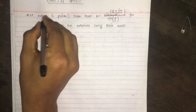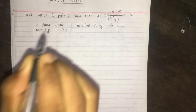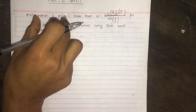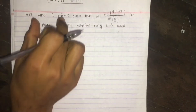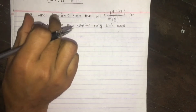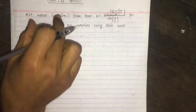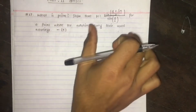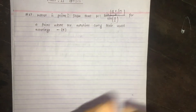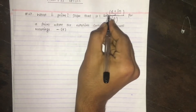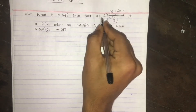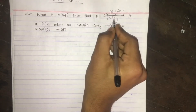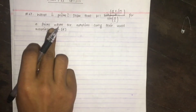What is a prism? What is the angle of prism? This question covers the condition of minimum deviation and its derivation, where mu is equal to sin((A + D_minimum)/2) divided by sin(A/2), for a prism where notation carries usual meaning.